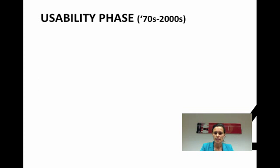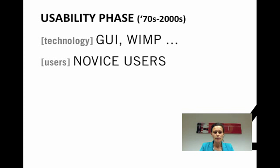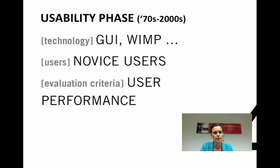From the 70s to 2000s we saw tremendous technological improvements. Just consider the graphical user interface, or the WIMP interaction style — WIMP stands for windows, icons, menus and pointing devices such as the mouse. Since then we expected that even novice users could easily use the systems with minimal training and support. A good system equaled an intuitive, user-friendly system.